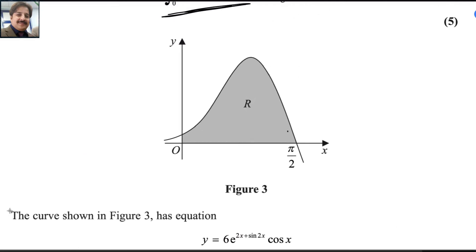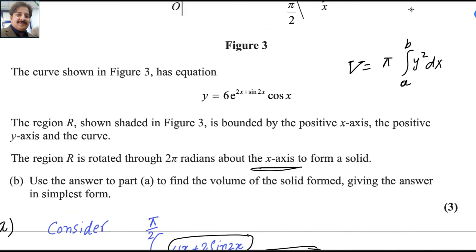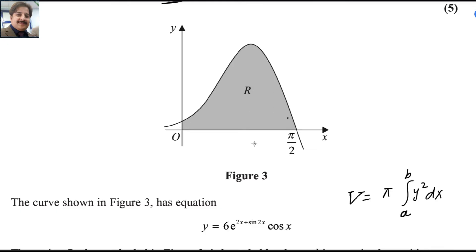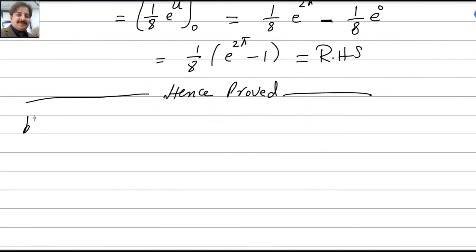For the next part, this shaded region is rotated. If you remember the formula, the volume for one rotation about the x-axis is V equals π times the integral from a to b of y squared dx. We want to find the shaded region only when you rotate about the x-axis. We will use the same formula. For the second part, volume for one rotation equals π times the integral from 0 to π/2 of y squared dx.